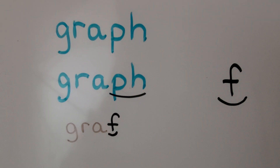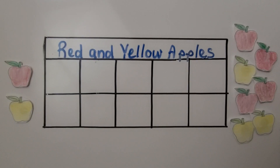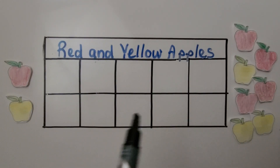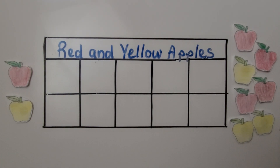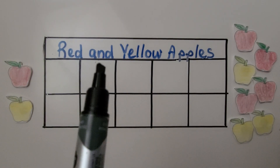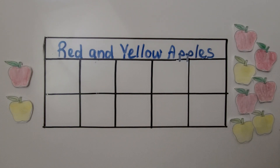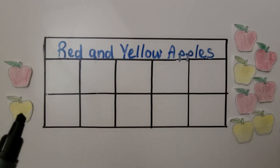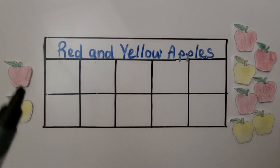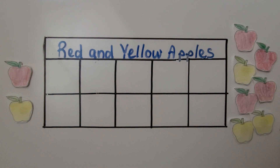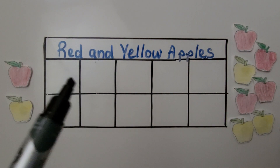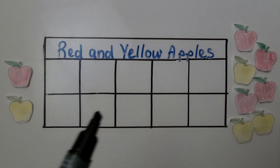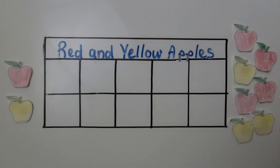A graph is a chart that shows information. This is a graph, and our graph has a title that describes the information — red and yellow apples. Our graph has two rows going across, and each row has a picture label. The top row shows the number of red apples, and the bottom row shows the number of yellow apples.